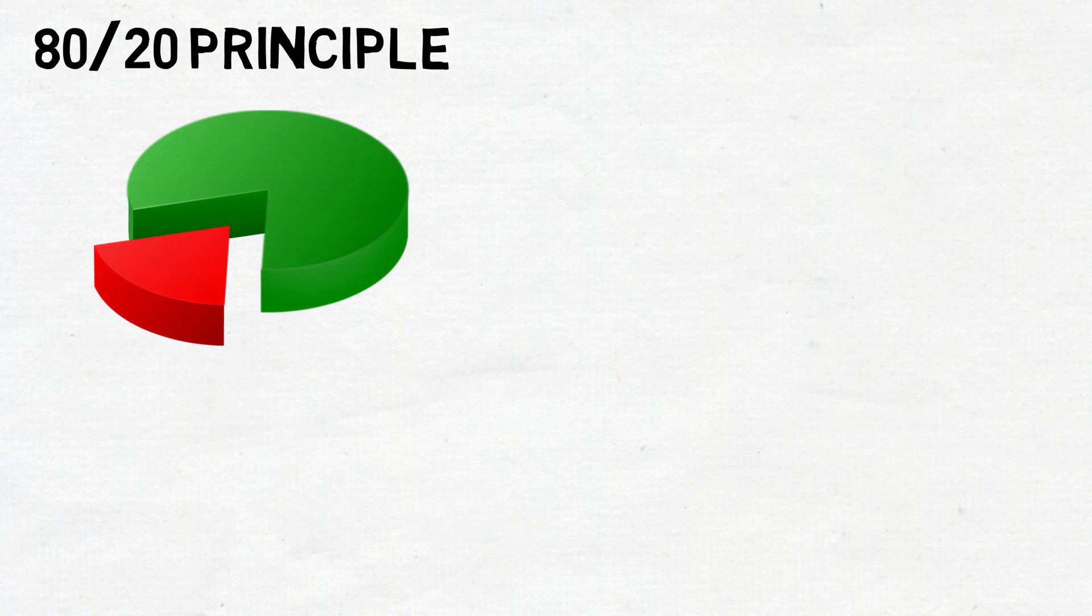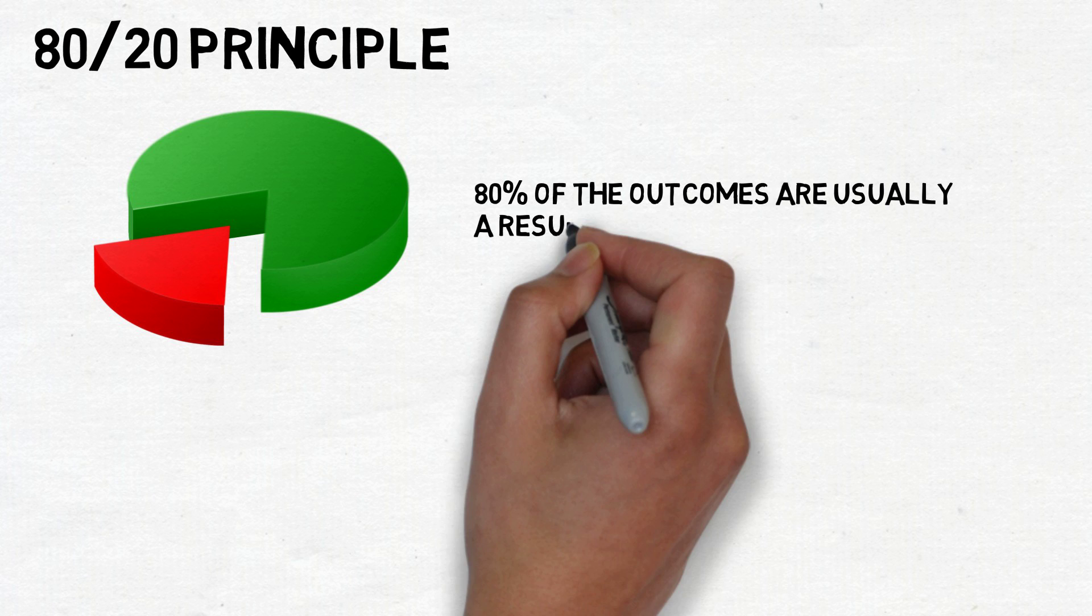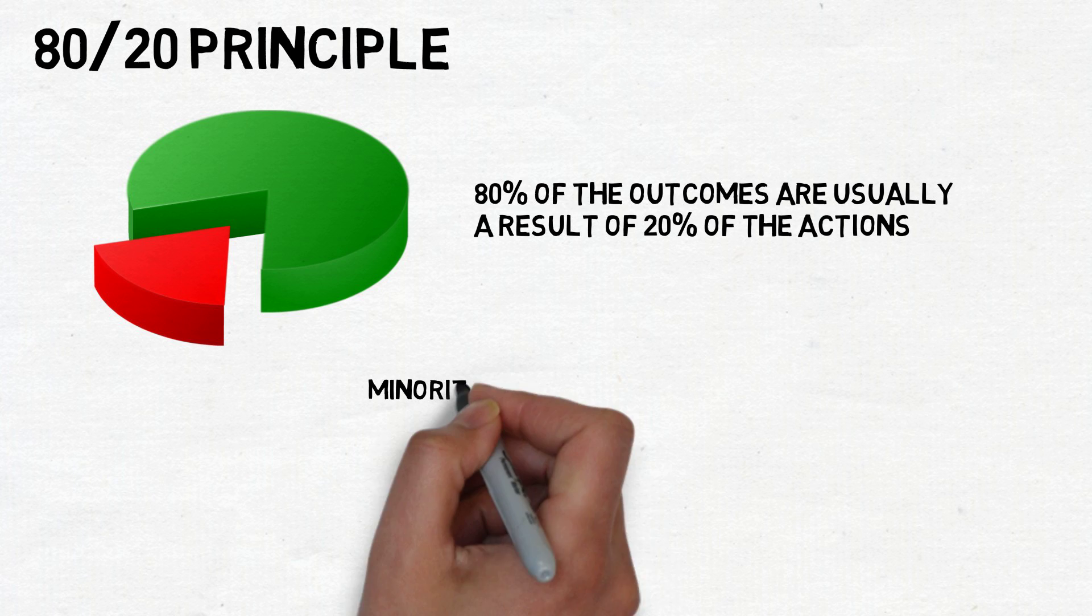The principle basically states this: 80% of the outcomes are usually the result of 20% of the actions. It's not an exact number, but in summary, a small percentage of what you do accounts for a large percentage of the results you experience.